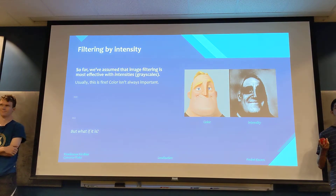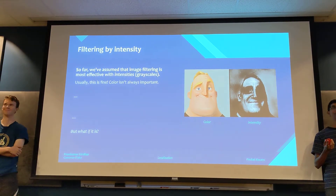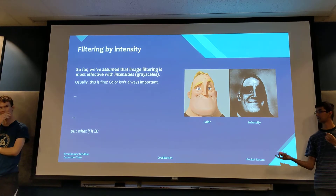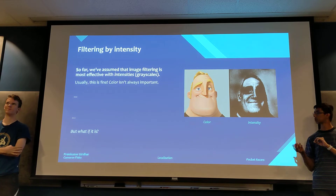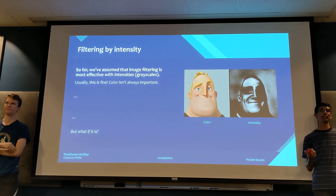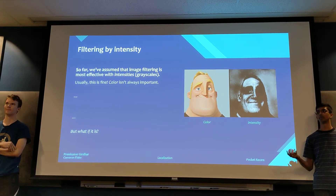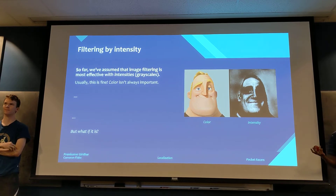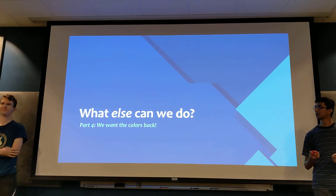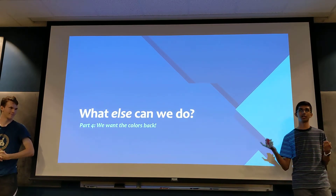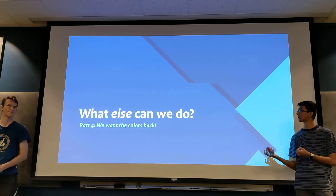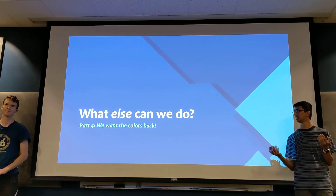So far we've assumed image filtering is most effective with intensities, which is what grayscaling does — you take the brightness of the image. Typically the color isn't important. But this begs the question: what if the color is important? In this part, we're going to want the colors back, so let's look at what we can do with colors.